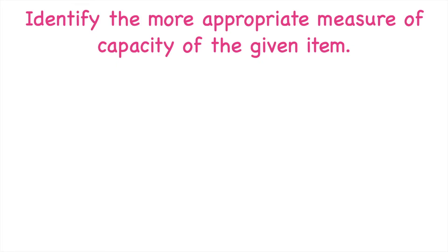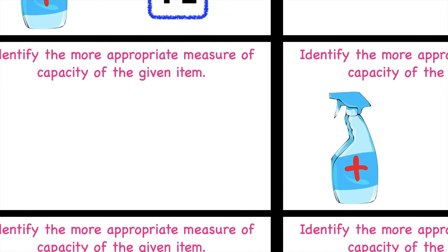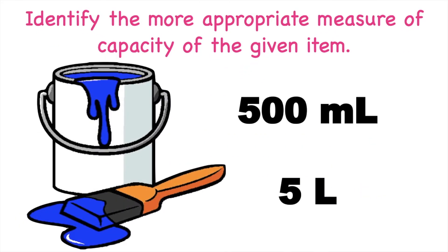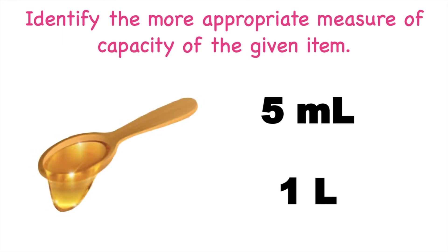Now let's identify the more appropriate measure of capacity of the given item. Are you ready? Let's have the first one: alcohol spray — is it 20 milliliters or 1 liter? Very good, children! This is 20 milliliters. How about a bucket of paint — is it 500 milliliters or 5 liters? Fantastic! This is 5 liters. How about a teaspoon of honey — is it 5 milliliters or 1 liter? Very good! This is 5 milliliters.